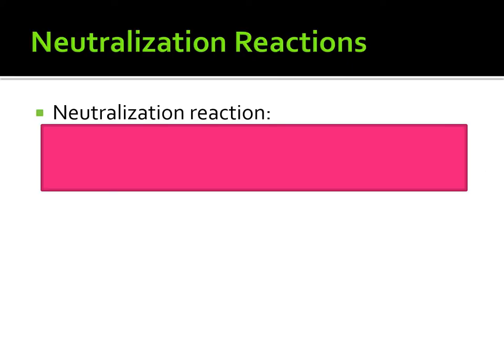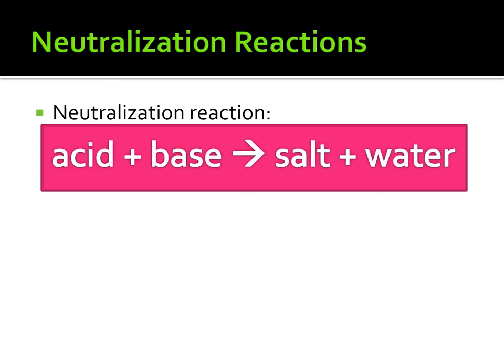Now I want you to look right underneath the box where you listed your properties of acids and bases. You'll see a title that says neutralization reactions with an arrow. Write above the arrow and leave room beneath it for an example. This is going to be the third time you're writing this — it's very important: acid plus base yields salt plus water. That arrow represents yields, meaning to produce or create.